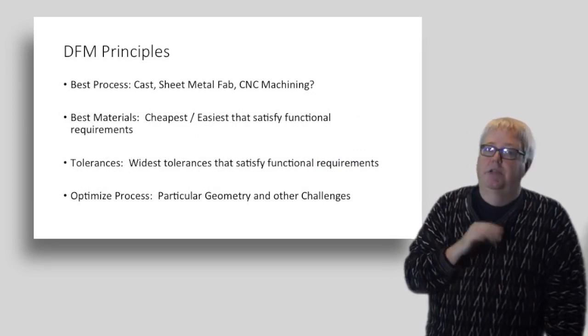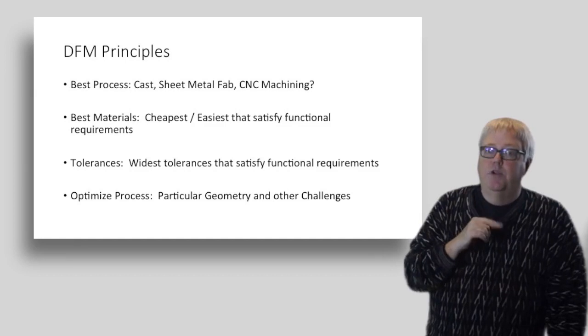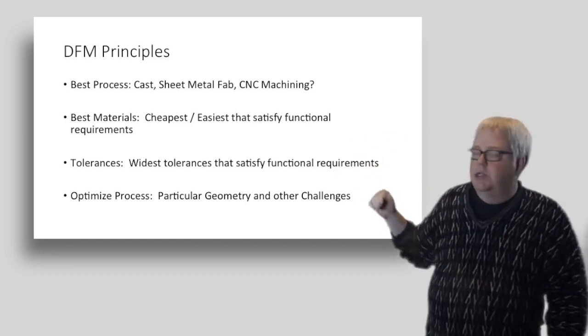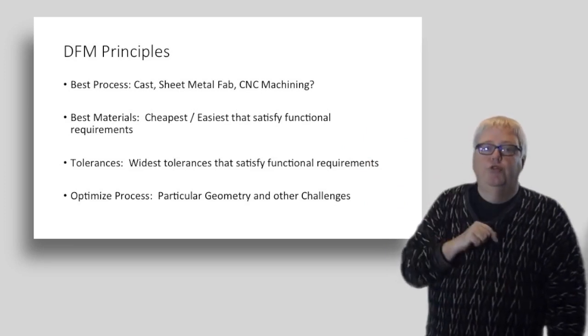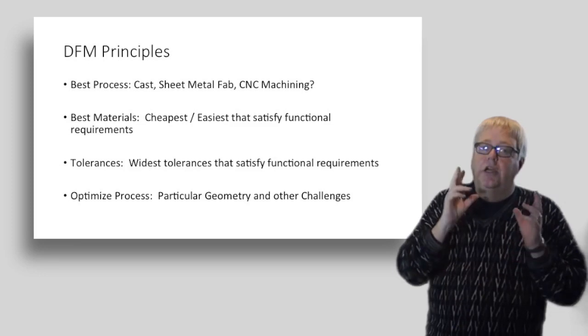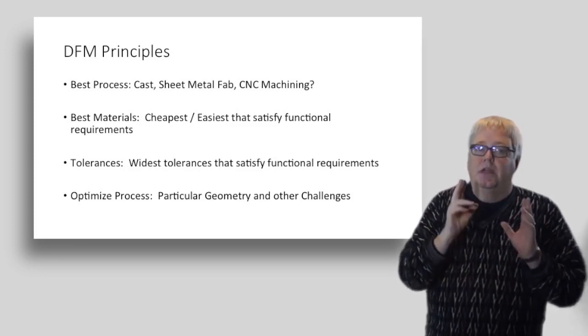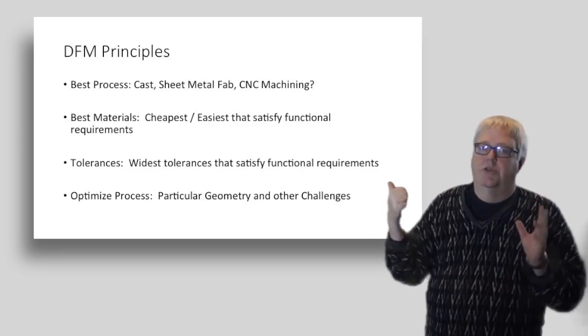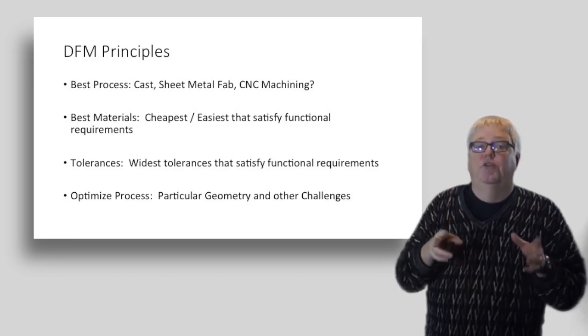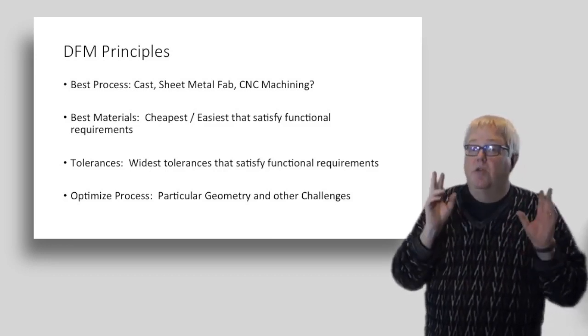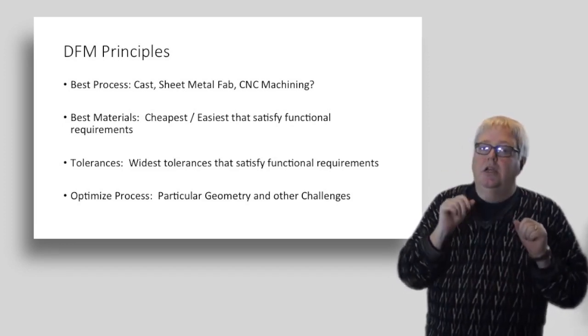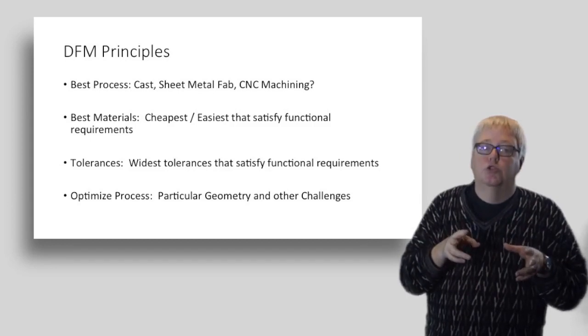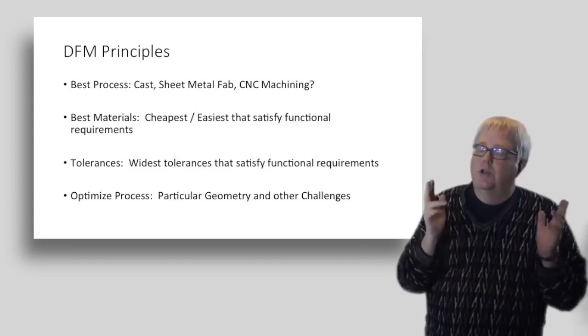Now let's talk about design for manufacturing. We're machinists and this is closer to where we work. The first DFM step is to choose the best process. Should we be casting, doing sheet metal fabrication, CNC machining, or what? Next, choose the cheapest and easiest to work materials that satisfy your parts functional requirements. Next, tolerances play a huge role in costs as you know. Avoid tight tolerances as much as possible. Just the bare minimum tolerances needed to satisfy your parts functional requirements. Lastly, there are many details on parts that affect the difficulty of machining. Particular geometries and other aspects lead to these challenges. If you can connect with the designers and let them know what's causing trouble, you may discover they have no problem changing the part to eliminate those issues.